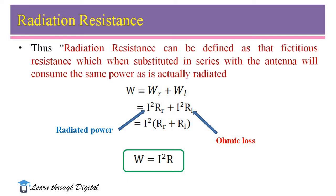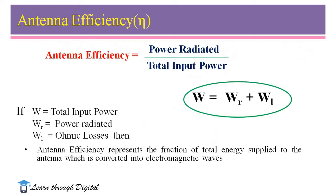Thus, the radiation resistance can be defined as that fictitious resistance which when substituted in series with the antenna will consume the same power as is actually radiated.